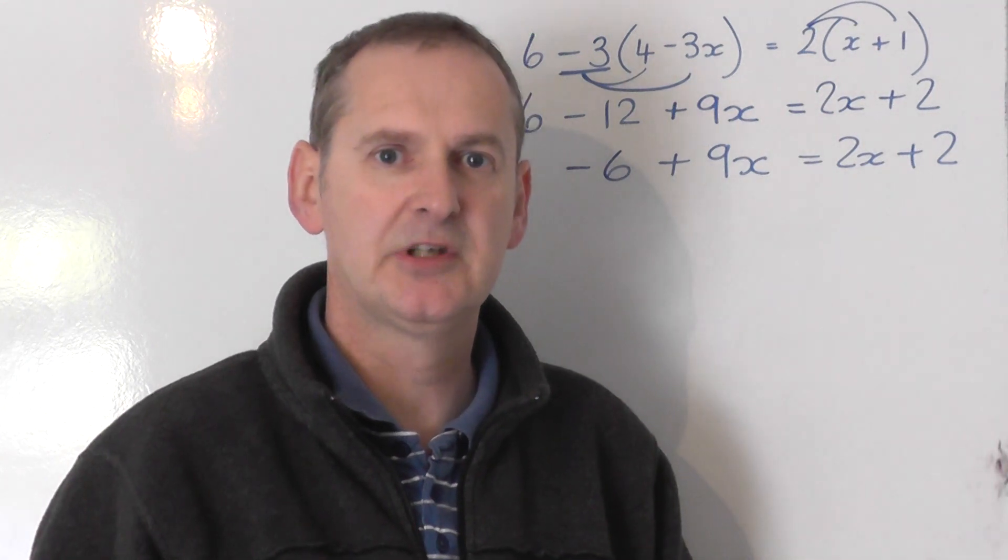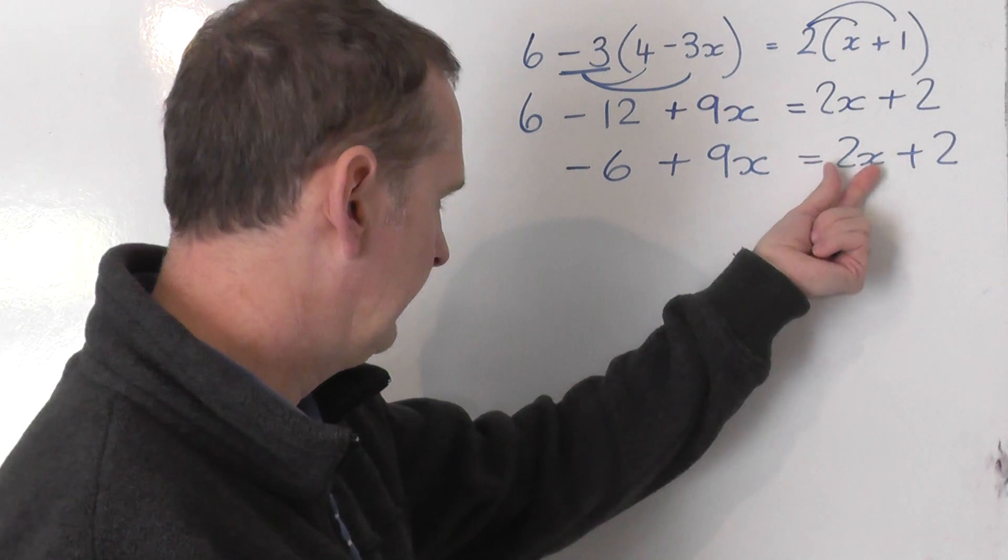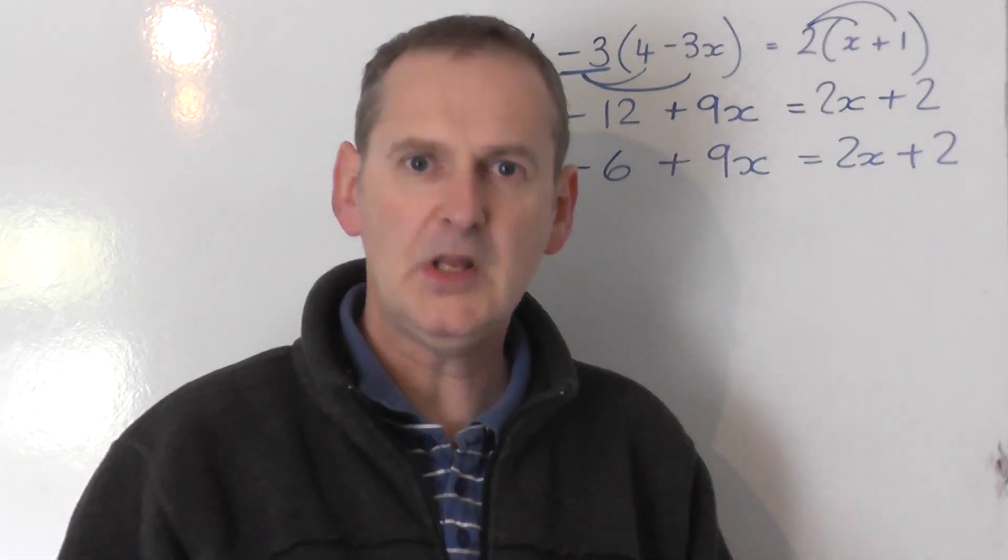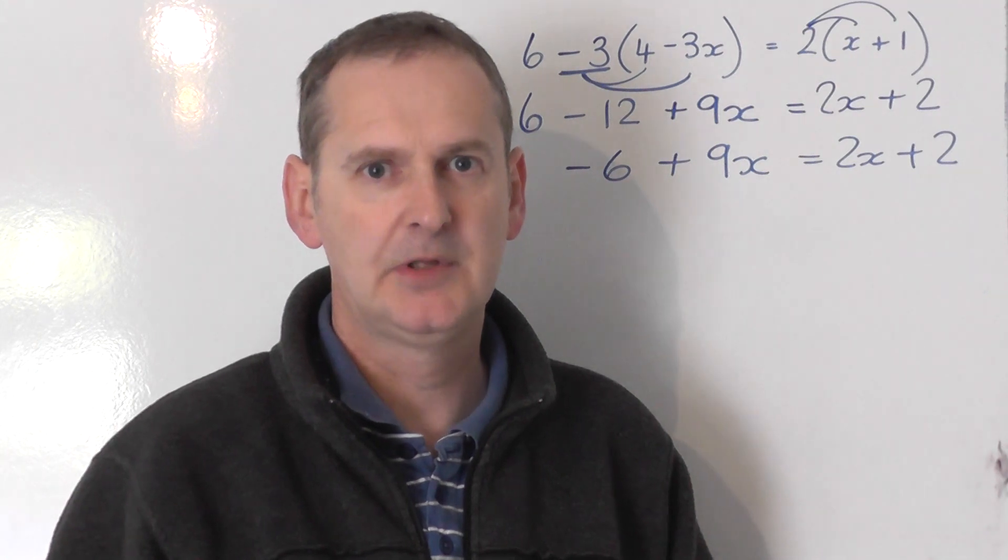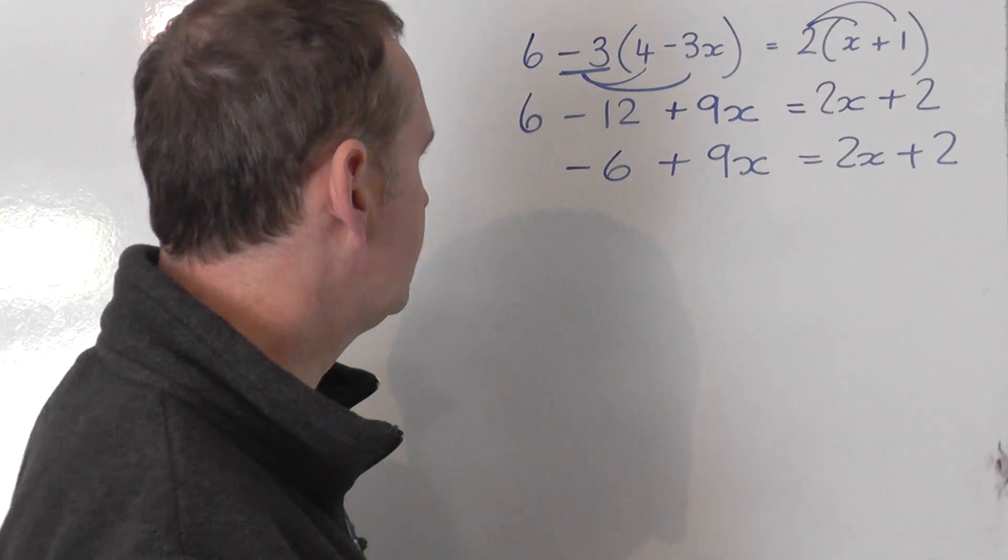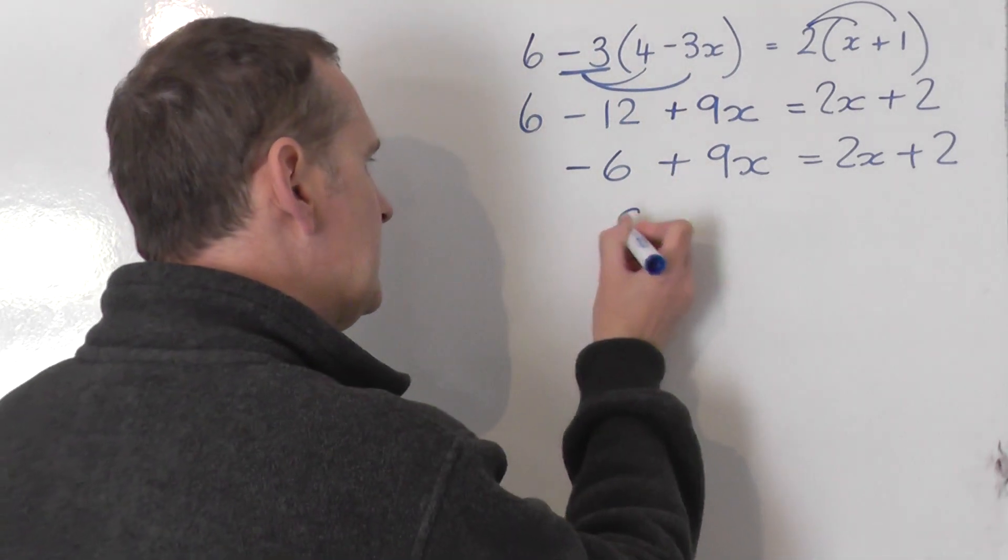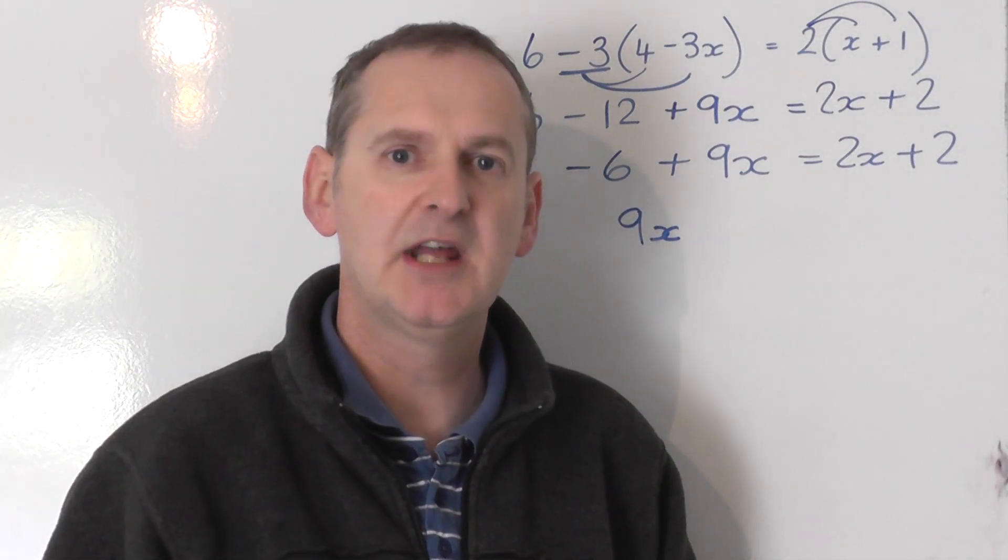I've got x's on both sides. Which side's got most x's? Well I've got a positive 9 on the left. I've got a 2 on the right. So that means there's more x's on the left. So I'm going to collect the x's on the left. So I'm going to leave the 9x on the left. Now it doesn't swap sides, so it remains as a plus. If it's the first thing I write down I can drop the plus from in front of it. So 9x.